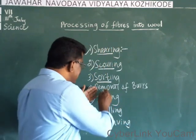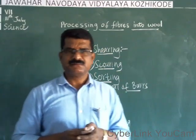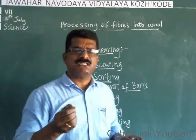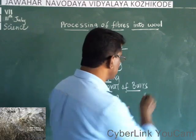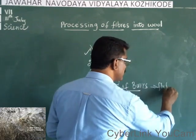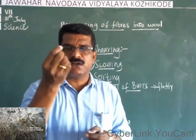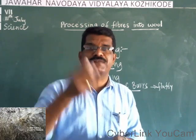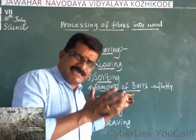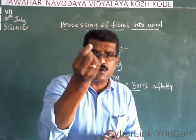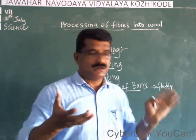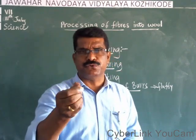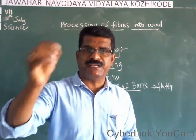After sorting, the next step is removal of burrs. Burrs — spelled B-U-R-R-S — means very small fluffy fibers. You might have seen in your sweaters those small hair-like structures. These small fluffy woolen fibers are called burrs, and they need to be removed because these very small fibers cannot be used for knitting and weaving. So removal of these minute fluffy fibers is the fourth step.